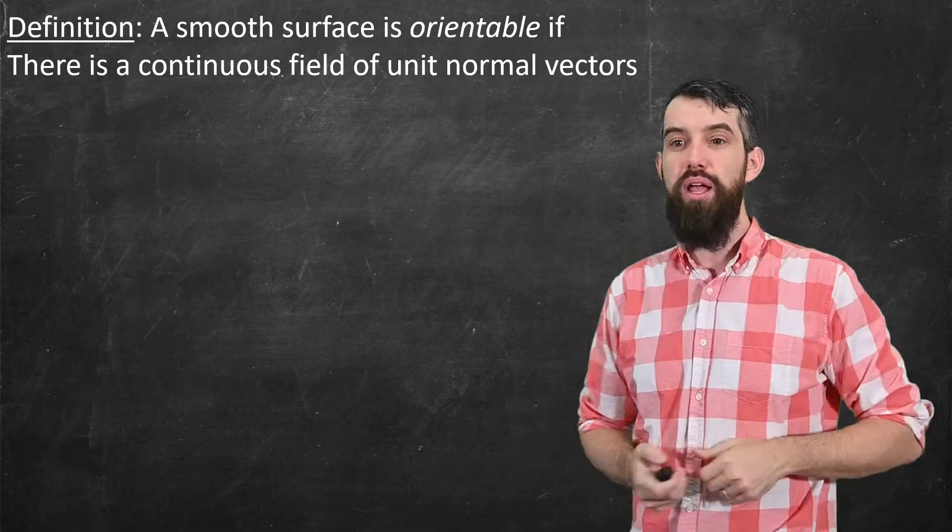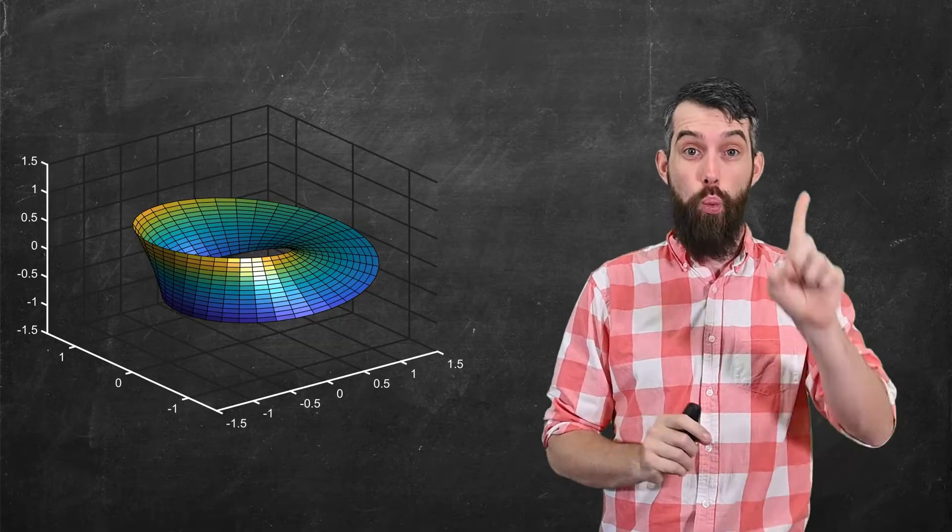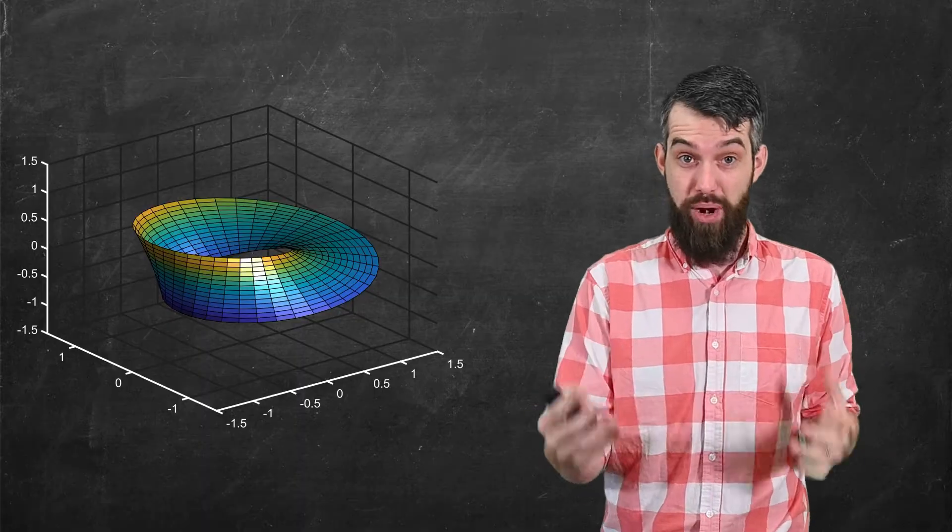Consider, for example, the Möbius strip. The Möbius strip is fascinating because it only has one side. Let me show you what I mean.